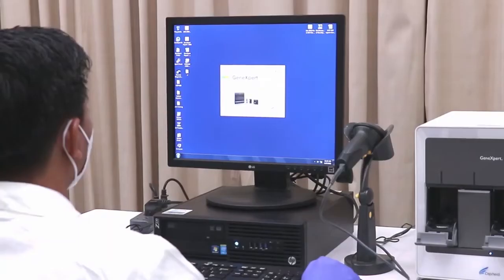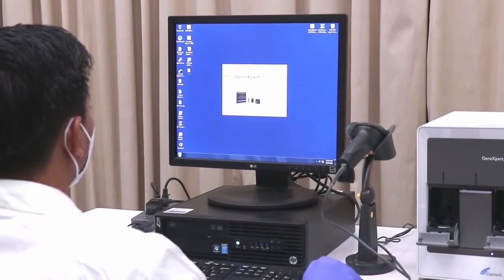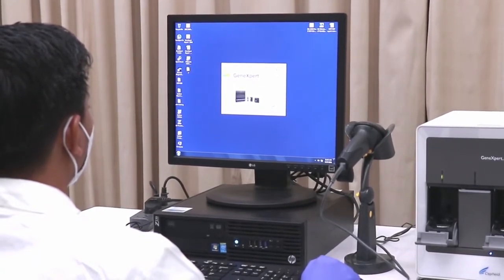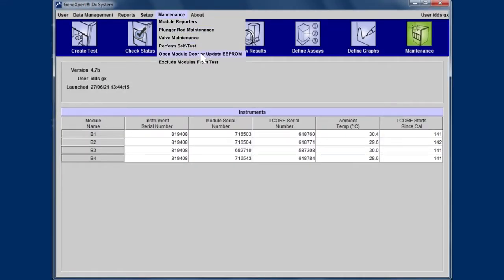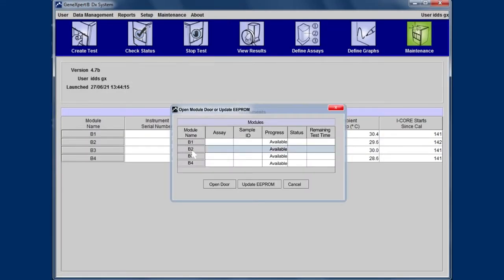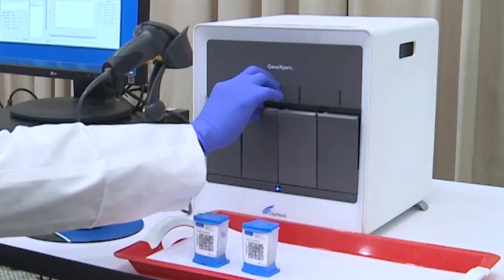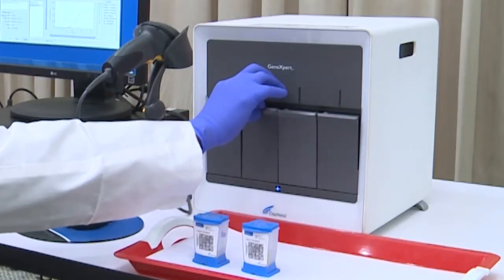If the stuck cartridge is not released, follow these steps to open the module door from the software as step two. If the cartridge is still not released, proceed to the manual release as the third step.